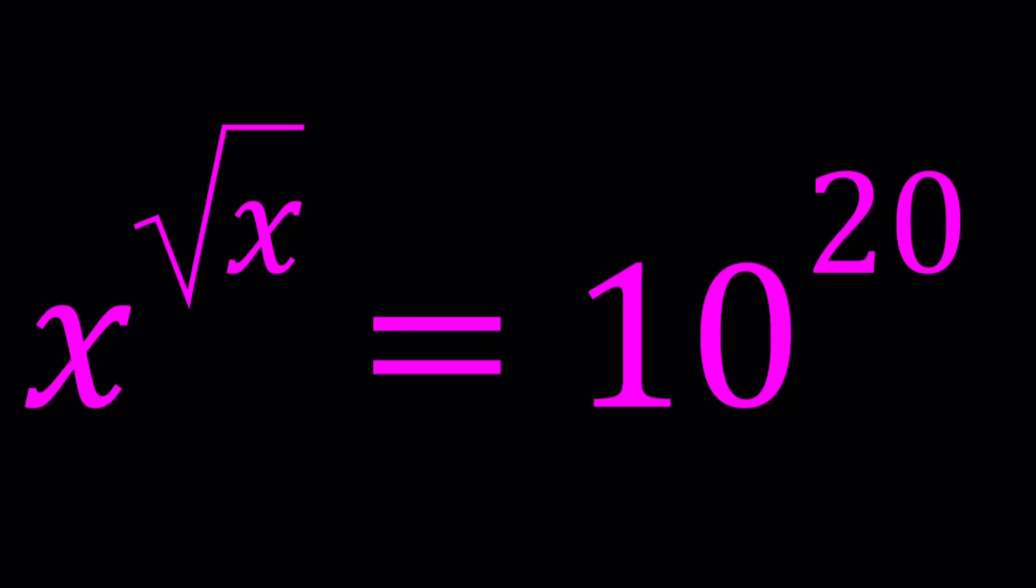Hello everyone, in this video we're going to be solving an exponential equation with radicals. We have x to the power square root of x equals 10 to the power 20, and we're going to be solving for x values. I'm also going to show you a graph at the end.